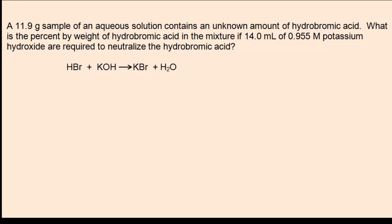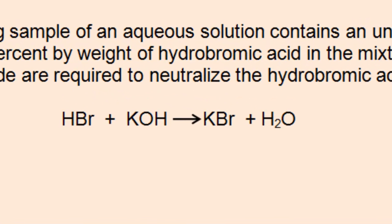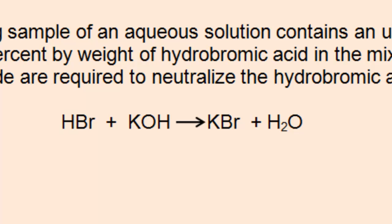14 mL of 0.955 M potassium hydroxide are used to titrate this sample. As always, make sure you have the chemistry down. One HBr and one KOH represent the stoichiometry for this titration.